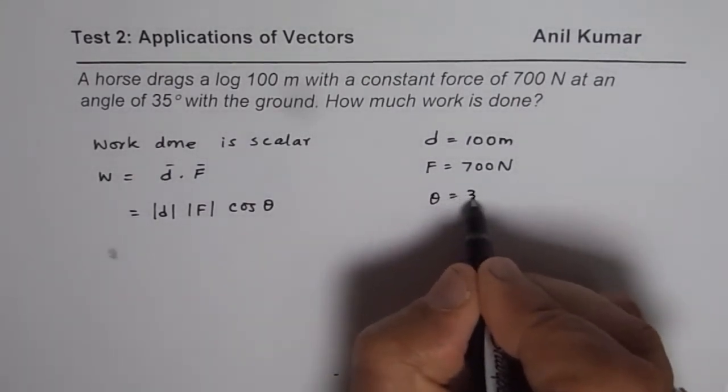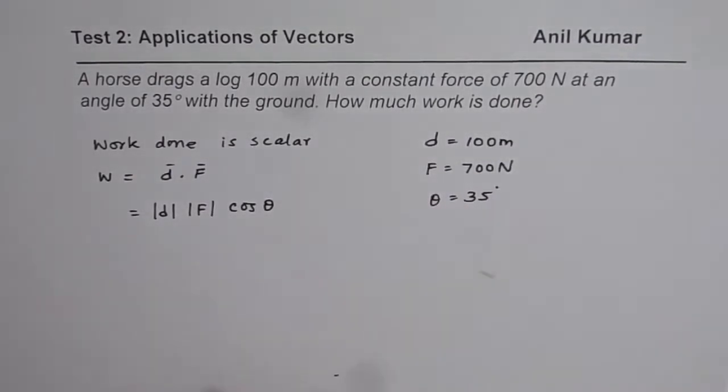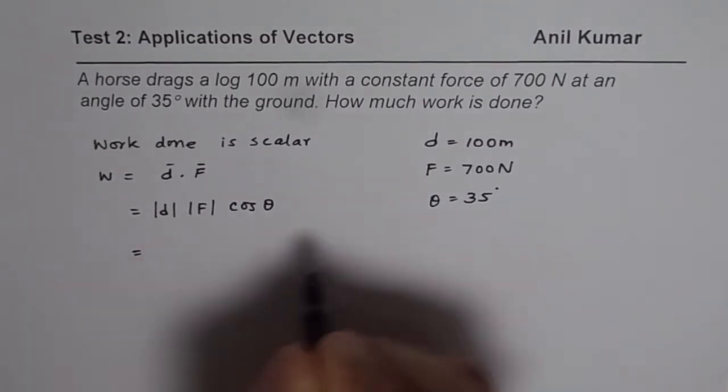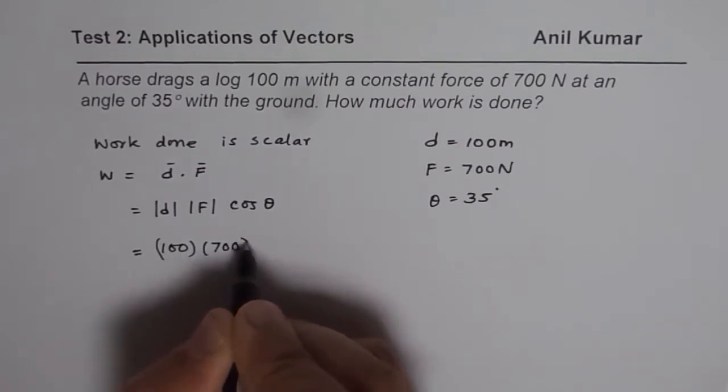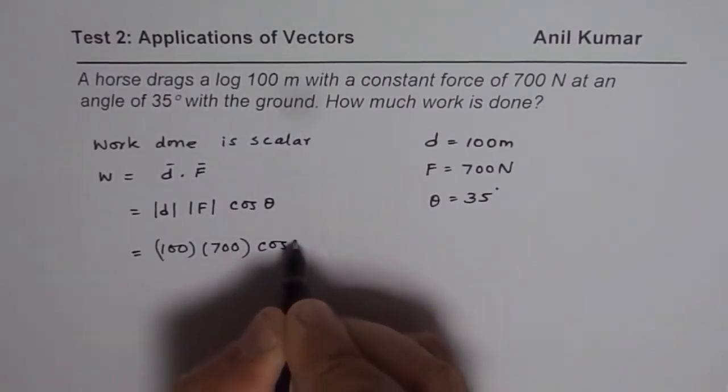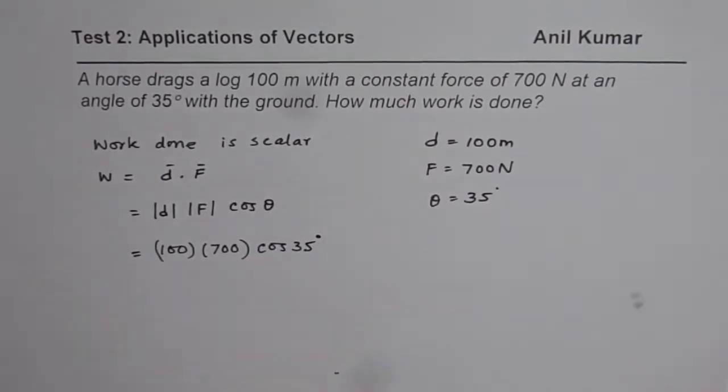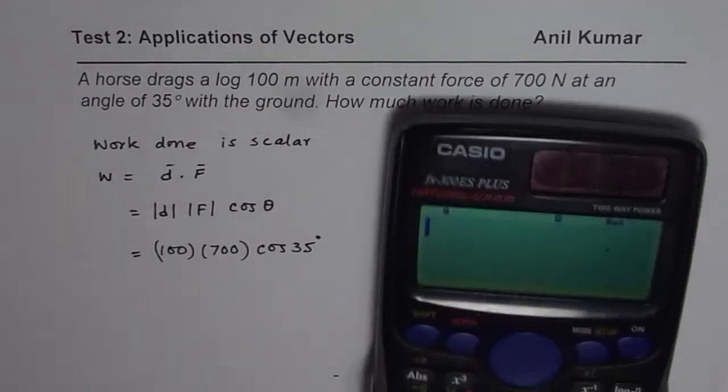Theta is given to us as 35 degrees. So we can now calculate the answer, which is 100 times 700 times cos of 35 degrees. Let us use the calculator to find the answer.